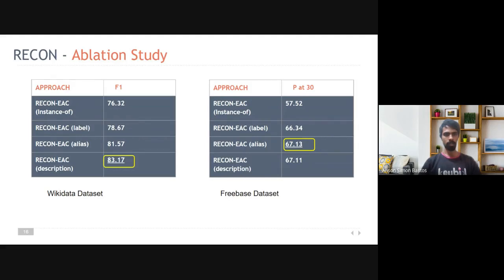We have done an ablation study in which we induce each of the context information individually to the model. And we see that different context information helps differently in different settings. For example, on the Wikidata dataset, description information gives the higher performance, whereas on the Freebase dataset, it is the alias information. This motivates the question that can we intelligently select context information before feeding it to the model?